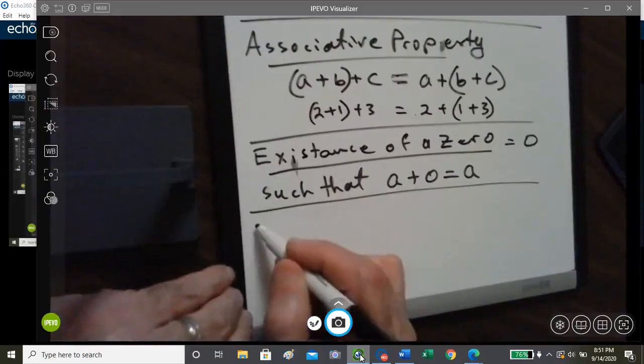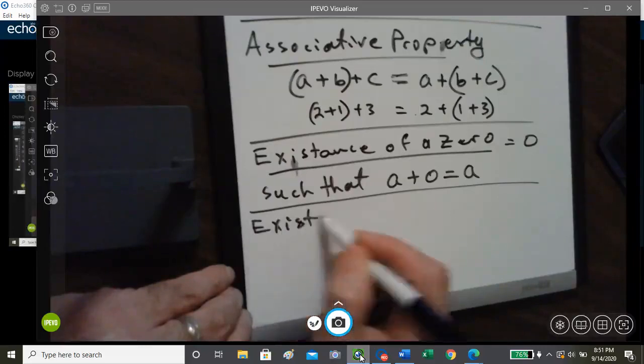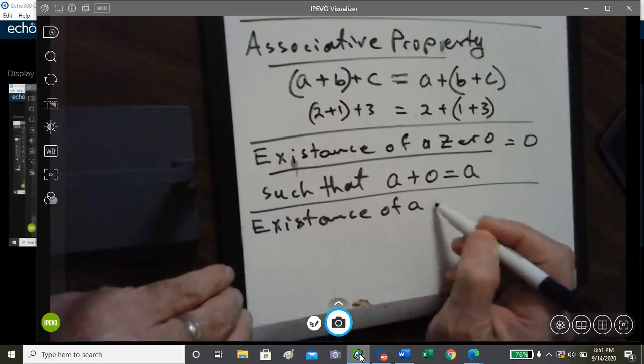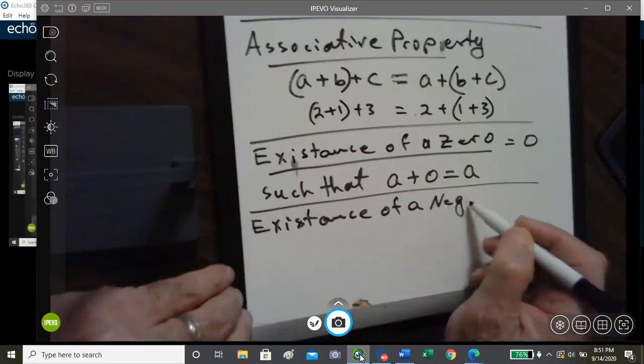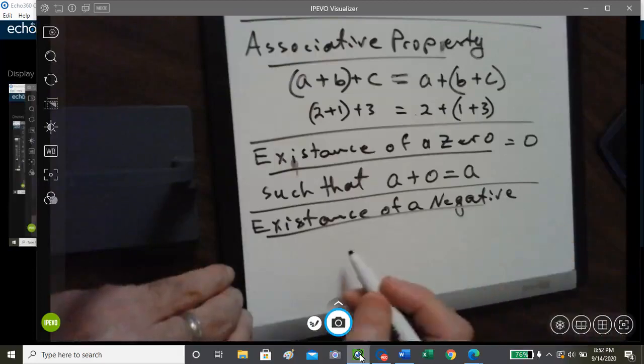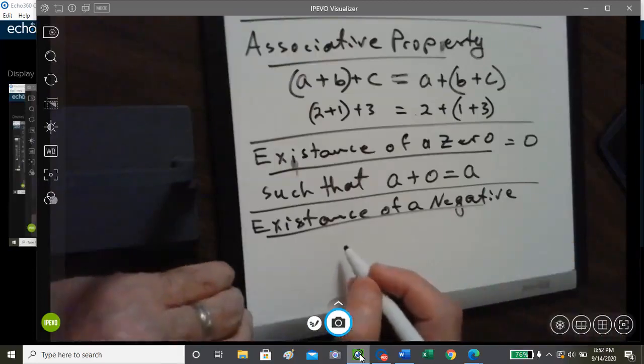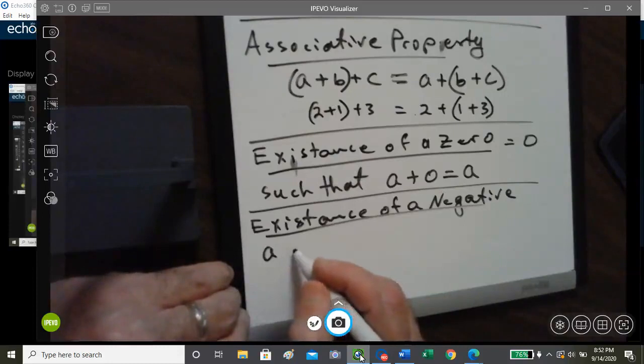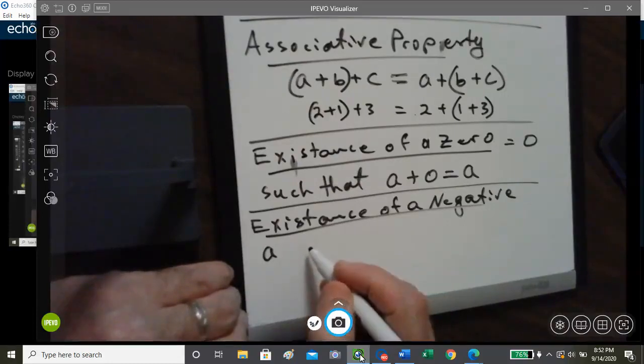And then the last, we have the existence of a negative. And that's where we have, if A is a number, then there's one and only one number X.